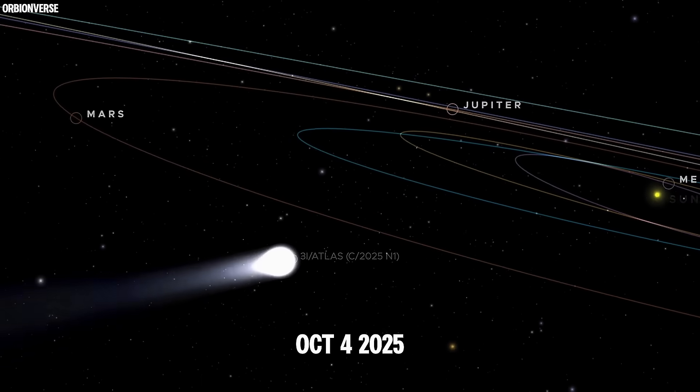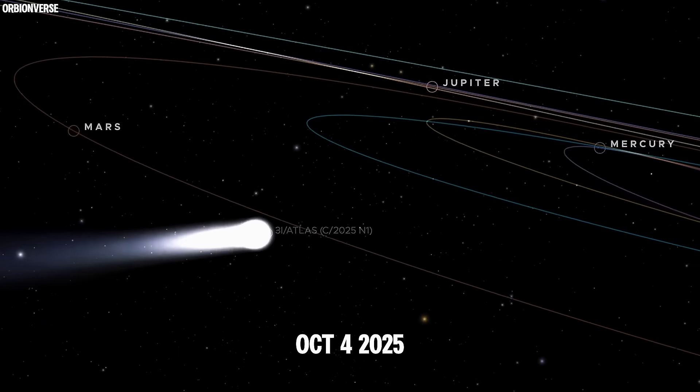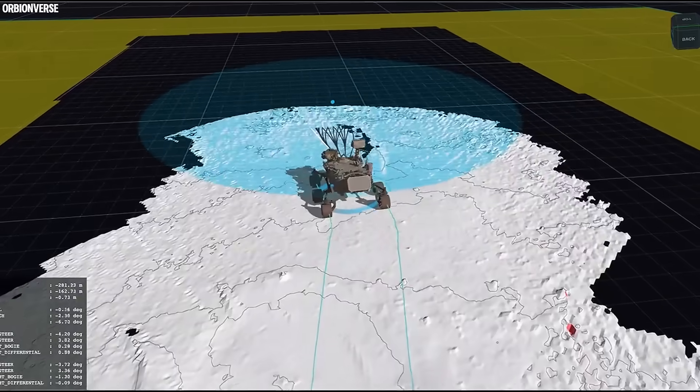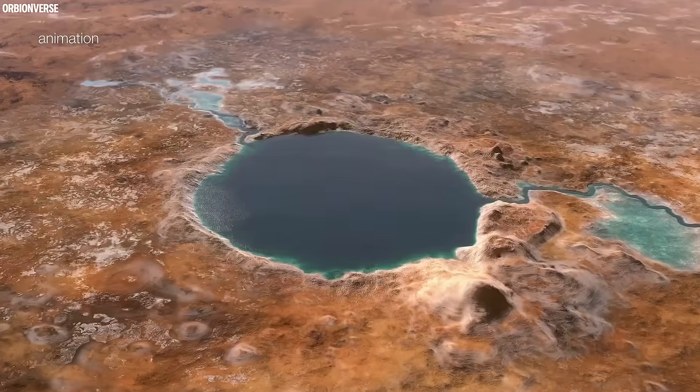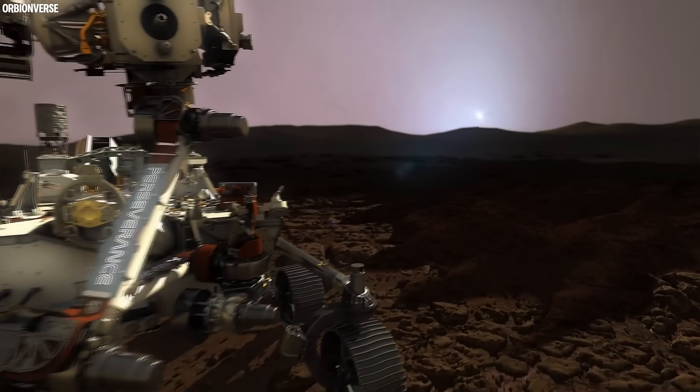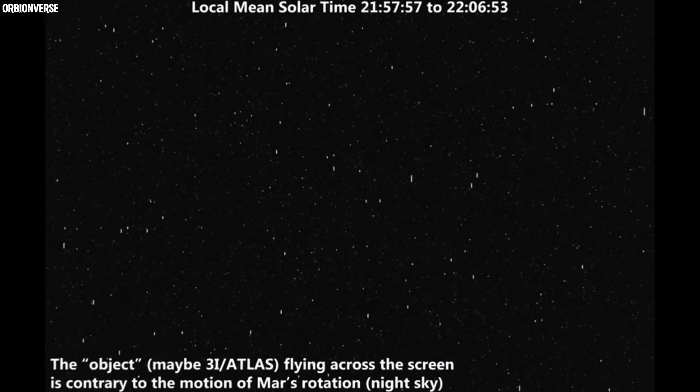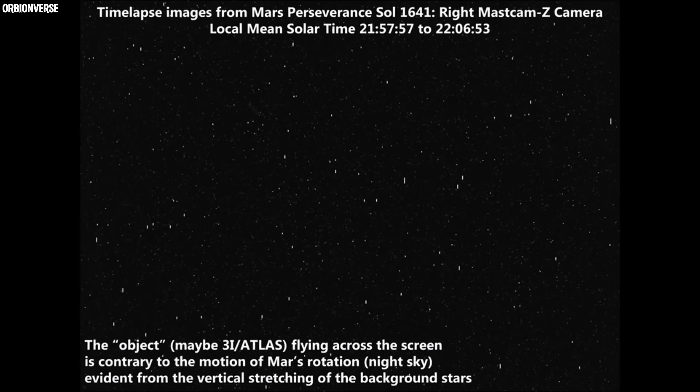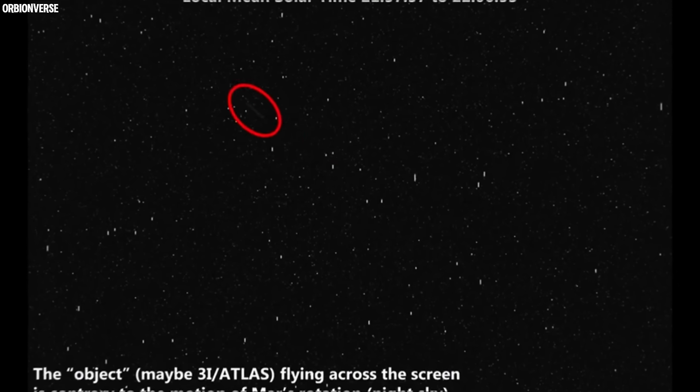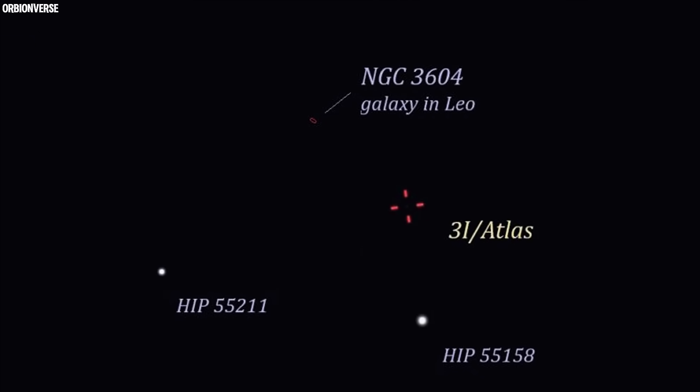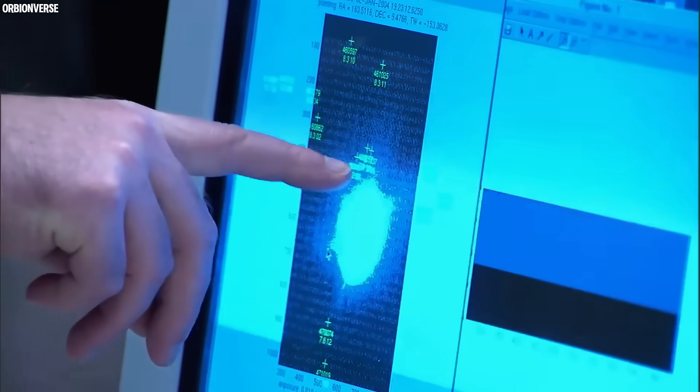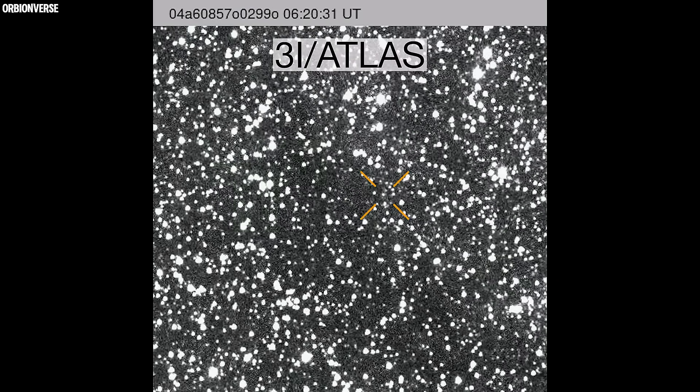On October 4th, 2025, NASA's Perseverance rover, sitting quietly in Jezero crater on Mars, turned its navigation camera skyward and captured a frame that ignited debate across the world. The image showed 3I/ATLAS, but not as a simple glowing dot like scientists had predicted. Instead, it appeared as an elongated stripe stretching across the Martian sky, sparking questions that no one had solid answers for.